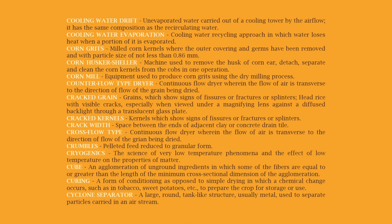Counterflow type dryer: a continuous flow dryer wherein the flow of air is opposite to the direction of flow of the grain being dried. Cracked grain: grains which show signs of fissures, fractures, or splinters; head rice with visible cracks, especially when viewed under a magnifying lens against a diffused backlight through a translucent glass plate. Cracked kernels: kernels which show signs of fissures, fractures, or splinters.